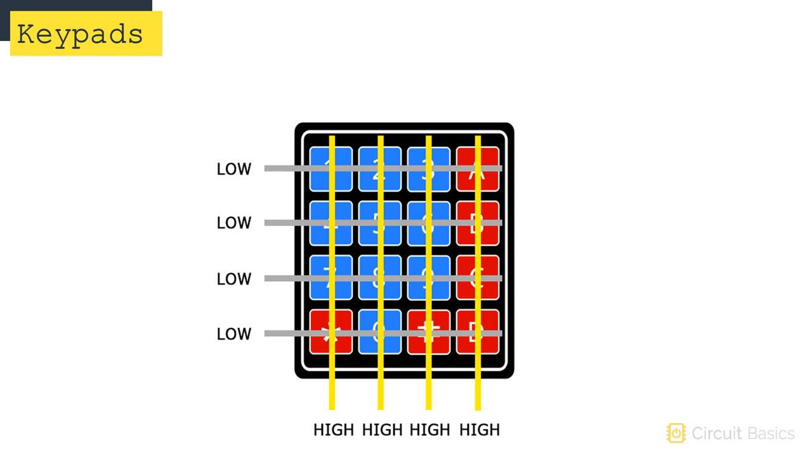First, when no buttons are pressed, all of the column pins are held high, and all of the row pins are held low. When a button is pressed, the column pin is pulled low, since the current from the high column pin flows to the low row pin. The Arduino now knows which column the button is in, it just needs to find which row the button is in.